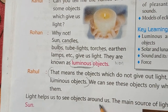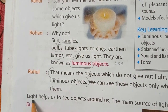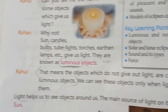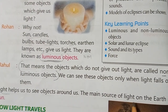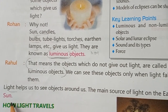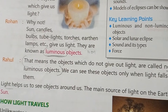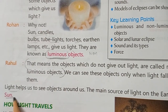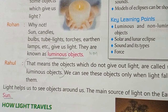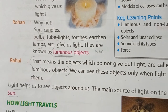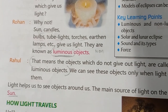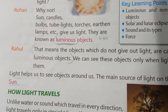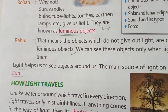Light helps us to see objects around us. The main source of light on the earth is the sun. If the sun does not rise during the day, everything around us will be dark and we will not be able to see anything. So the main source of light is the sun.